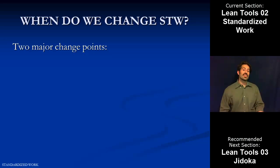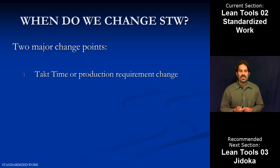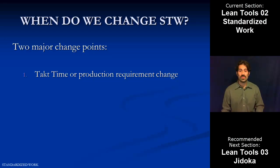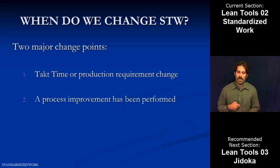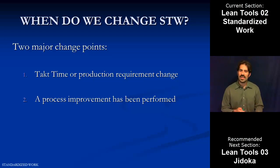Once we've created standardized work, eventually we're going to have to change it, but there are really two major change points. The first is if there's a takt time or production requirement change — if our customer demand changes. In the example, our customer wanted 1,500 units a month; if they want 2,000 or just 1,000, that is a takt time change that will necessitate changing our standardized work. The second is if we've done a process improvement: if we had a Kaizen activity and eliminated waste, we go back, confirm how much time we saved, and restructure our standardized work to incorporate that change going forward. It's a dynamic thing — it evolves as demand changes and as we make improvements.